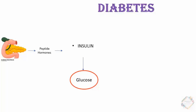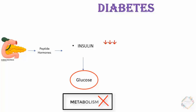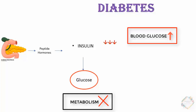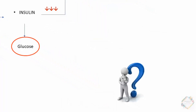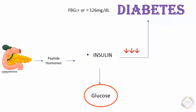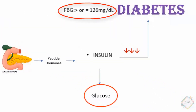What happens in diabetes? When insulin gets deficient or there is a lack of insulin, glucose metabolism does not take place, meaning there will be an elevated amount of glucose in the bloodstream. This leads to diabetes, also known as hyperglycemia. A patient is considered diabetic when their fasting blood glucose level is equal to or more than 126 milligrams per deciliter.